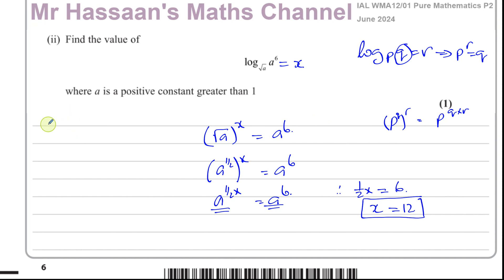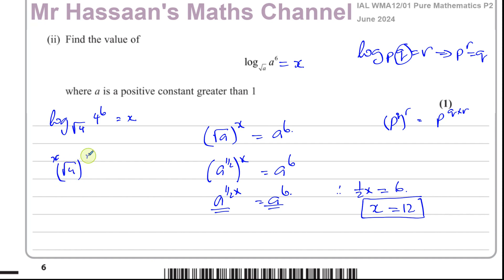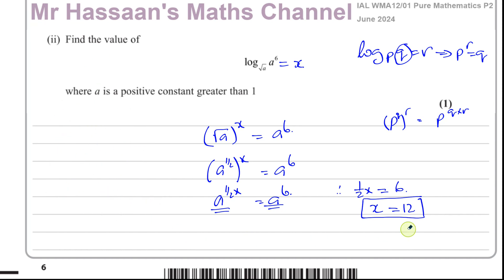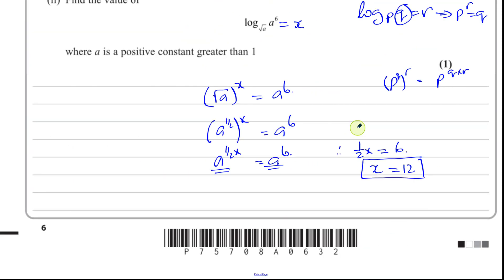You can try it out — for example, put log base root 4 of 4 to the power of 6. Then root 4 to the power of x equals 4 to the power of 6, so 4 to the power of (x over 2) equals 4 to the power of 6, meaning x over 2 equals 6, so x equals 12. You get the same result every time. So x equals 12 is the answer, and that concludes question number 3, which is all about logarithms.